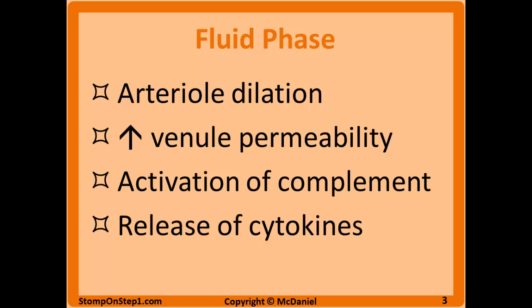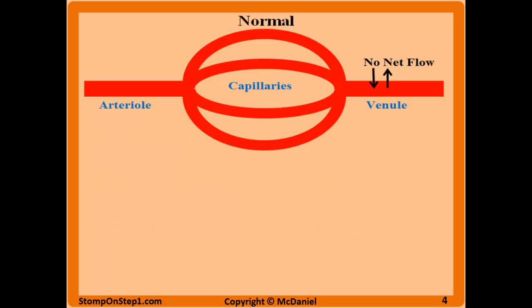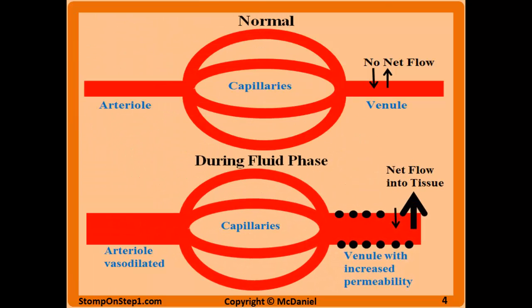Here is a diagram covering what happens during the fluid phase. First we look at a normal vessel: the arteriole leads into the capillaries which exit into the venule, a small vein. Normally there is no net flow between the vessel and the tissue — the amount of fluid flowing out into the tissue is approximately equal to the fluid flowing back into the vessels. However, during the fluid phase of acute inflammation there is net flow of fluid into the tissue, with much more fluid flowing in than returning.